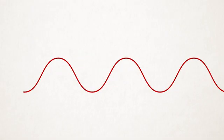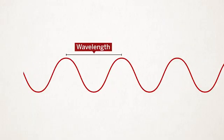Wavelength is the distance from one peak to another. A wavelength can be long or it can be short.